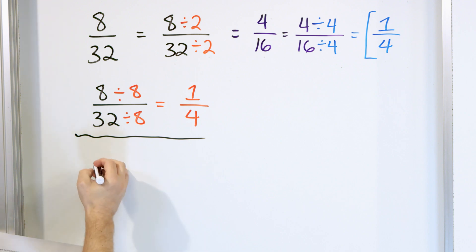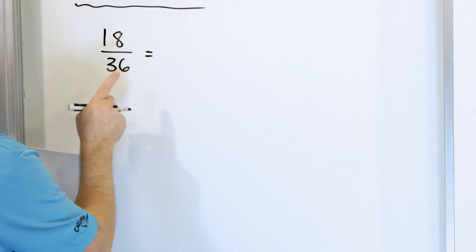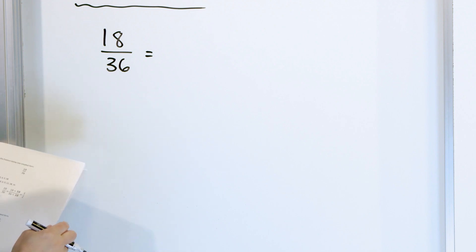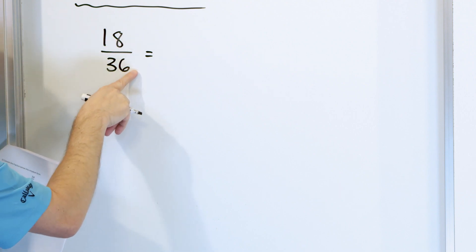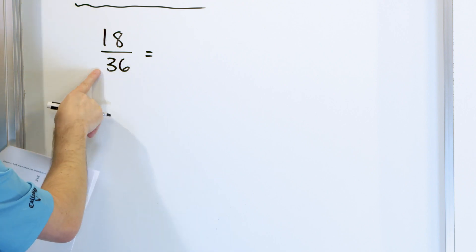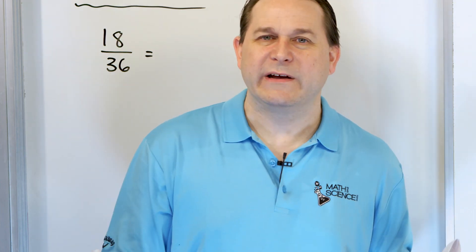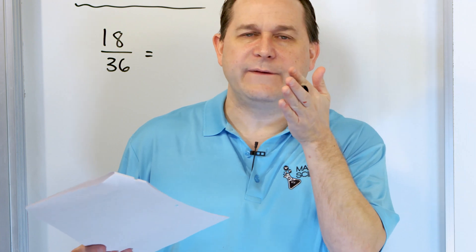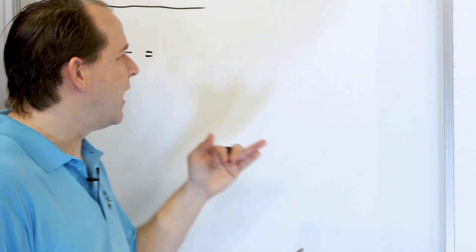Next problem: 18/36. I know that 9 times 2 is 18 and 9 times 4 is 36, so I can divide both by 9. But there are other choices - I can divide by 2 because it's even, or by 6 because 6 times 3 is 18 and 6 times 6 is 36. So thinking through it, I can divide by 2, 3, 6, or 9. You can divide by whatever you want, but you may have to repeat the process if you don't divide by the largest common factor.